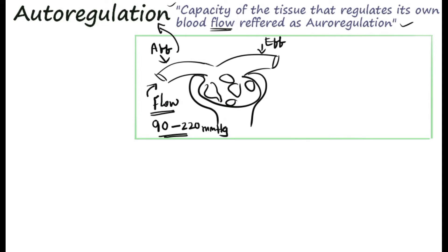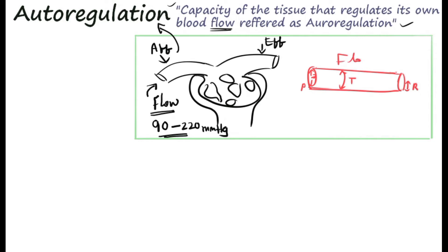Looking at the general blood vessels in the body, this blood vessel maintains its constant flow despite blood pressure fluctuations. Here, pressure is represented as P, wall tension as T, and R indicates radius. In normal conditions, blood flow in the systemic circulation — mainly arteries and arterioles — remains constant despite pressure fluctuations. Tension is proportionate to pressure, and the radius decreases or increases with pressure changes.